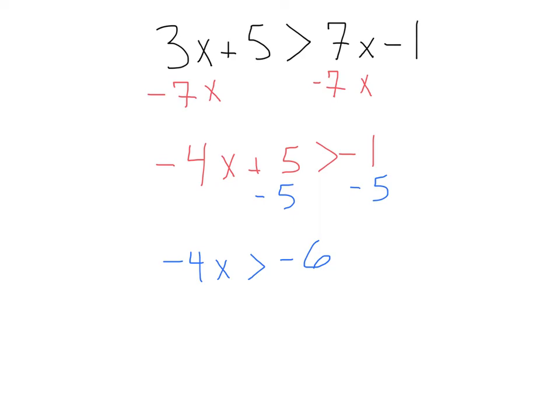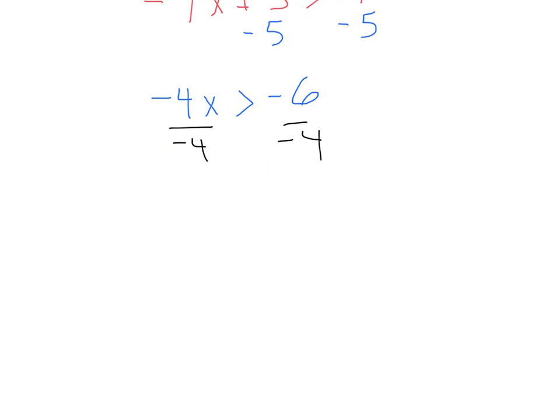So we're going to subtract 5 from each side. That gives us negative 4x is greater than negative 6. And then let's go ahead and divide by negative 4 on both sides. Remember, we just divided by a negative. What's that mean? Our sign is going to flip. So instead of greater than, we're going to have less than. And we're going to have x is less than negative 6 over negative 4. Now we can simplify this. Our negatives, since we have two negatives, that's going to become positive. And 6 over 4, we know that 2 can go into each of those. So that's going to give us x is less than 3 halves.